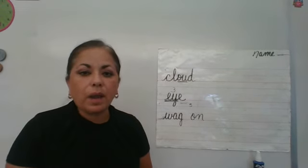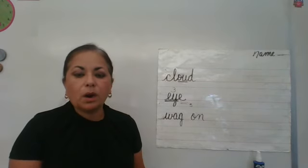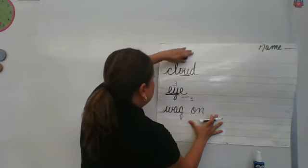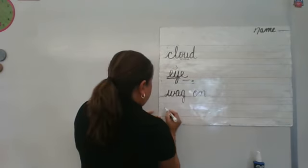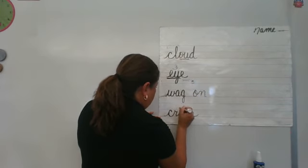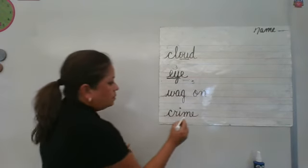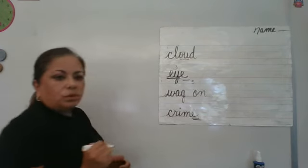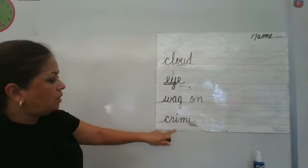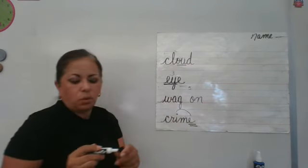The word is crime. Crime, one syllable. We have a silent E. The I says I, so it's there to tell the I to say I. It's rule number one.